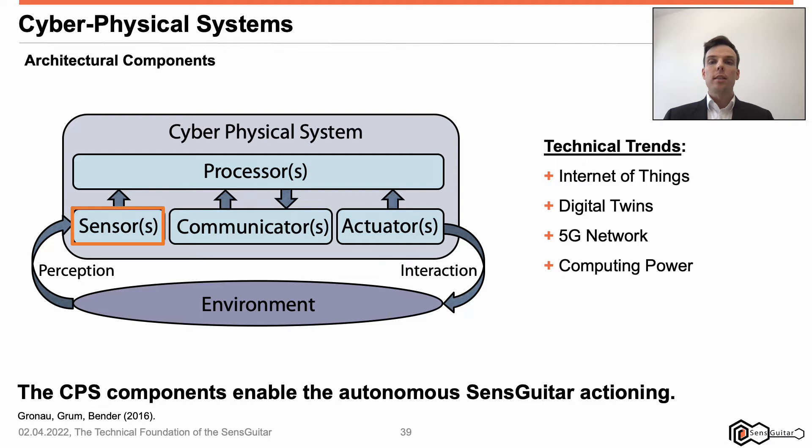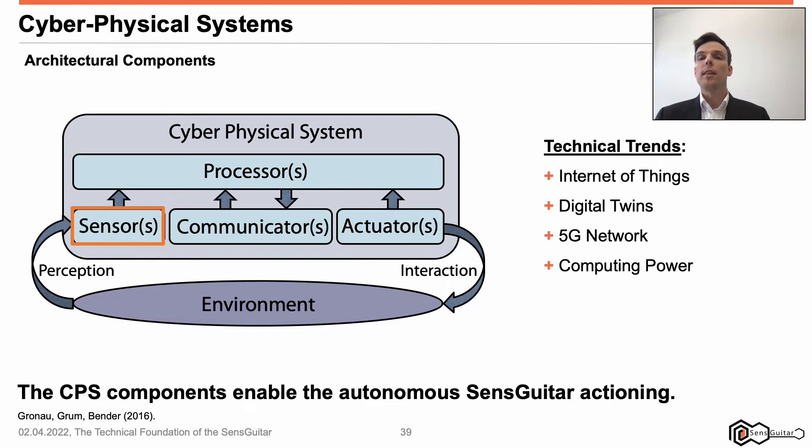First, sensors. By different kinds of sensors, the cyber-physical system perceives its environment. At the environment, one can find any kind of situational aspect of the cyber-physical system, such as the guitarist. Thus, the sense guitar needs to recognize guitarist activities — for instance, fingertips on the fretboard, menu hits by the guitarist, string attacks, etc.